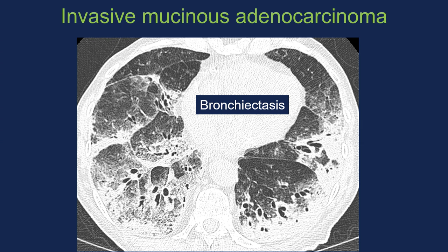Because there is so much mucin secreted in the airways and it can be coughed up by the patient, patients not infrequently have bronchiectasis. One case was misinterpreted as aspiration — probably acute and chronic aspiration — but autopsy showed almost all of the abnormalities in the lungs were malignancy and mucin production. The airways are quite dilated, which can make you think of an inflammatory disease, but it is actually malignant.